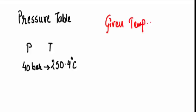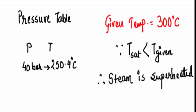The temperature reading on Raju's machine A is given as 300 degree celsius. Now since the saturation temperature is 250.4 which is less than the given temperature, the given steam is superheated.